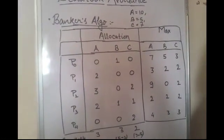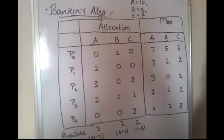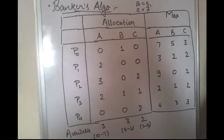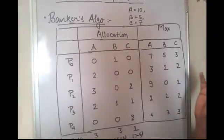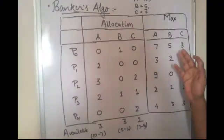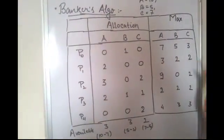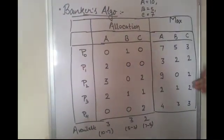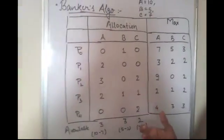First when a process comes into the system it has to specify its maximum need for each particular resource instance. In this case we see P0 has a maximum requirement of 7 instances of A, 5 instances of B, 3 instances of C. In the same way, maximum resource requirements are specified for each of the 5 processes, as shown here.